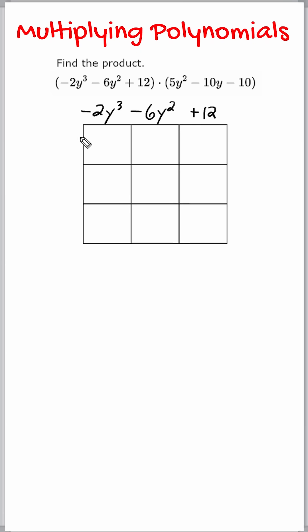And for these three boxes, we're going to write 5y squared, negative 10y, and negative 10. All right, so for this box, we're going to multiply these two terms together. So negative 2 times 5 is negative 10, and y cubed times y squared is y to the fifth. Remember, when multiplying like bases, we add the exponents.